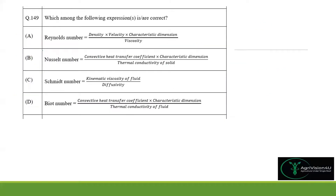Moving ahead to question number 149: which among the following expressions is or are correct? Option A: Reynolds number is density multiplied by velocity multiplied by characteristic dimension divided by viscosity — that is Rho·V·D / Mu — which is correct. This is also an MSQ question.